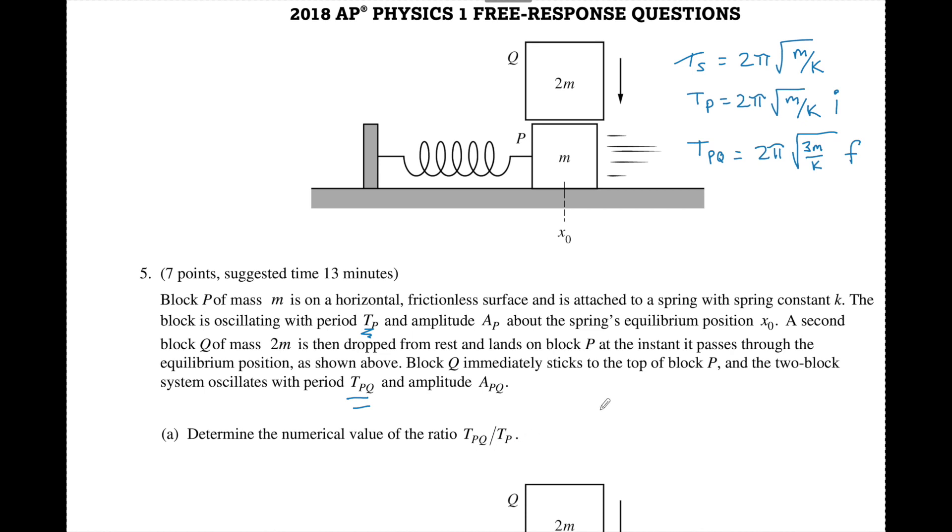So now when I want to take the ratio of this I put T pq divided by T p and I have this 2π square root of 3m over k divided by 2π square root of m over k. Now doing some math we know we can cancel this out and when you have a radical on top and bottom you can write this as one big radical with a compound fraction 3m over k divided by m over k.